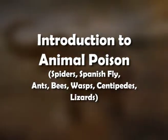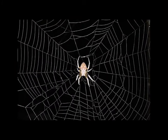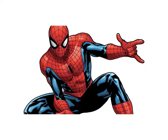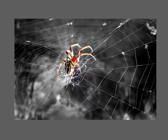We start with Module 1: Introduction to Animal Poison — Spiders, Spanish Fly, Ants, Bees, Wasp, Centipedes, and Lizards. Spiders make nets to catch their prey. Many of them are harmless in the sense that they do not attack unless provoked. Two varieties of spiders are capable of producing severe toxicity.